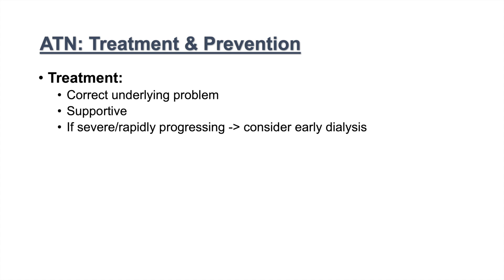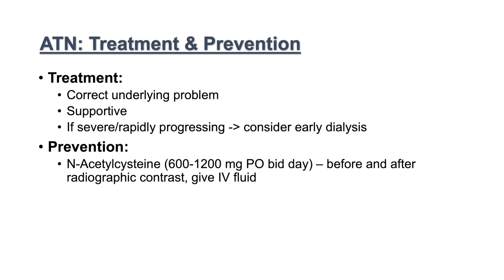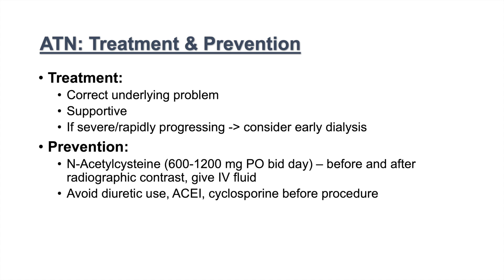If ATN is severe or rapidly progressing, we may consider early dialysis. For prevention, we identify high-risk patients and avoid nephrotoxics when possible. If IV contrast is required, N-acetylcysteine 600 to 1200 mg BID before and after contrast, along with IV fluids, has been used to reduce contrast-induced nephropathy, though we are beginning to move away from N-acetylcysteine. We also want to avoid diuretics, ACE inhibitors, and cyclosporine before an IV contrast procedure.